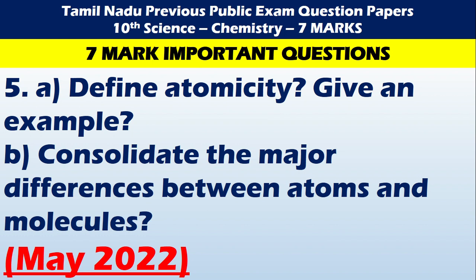Atoms and molecules — this topic is located in May 2022. Atomicity: the number of atoms present in a molecule is called atomicity. Molecular mass divided by atomic mass gives atomicity. Difference between atoms and molecules — this is the difference, along with atomicity.